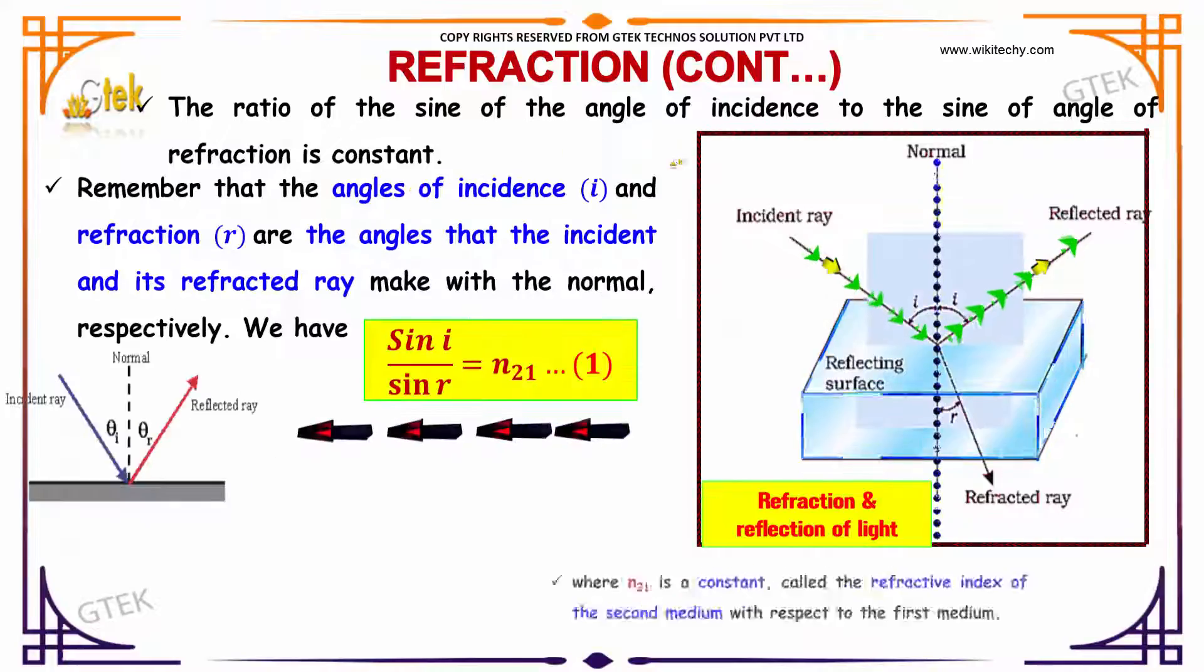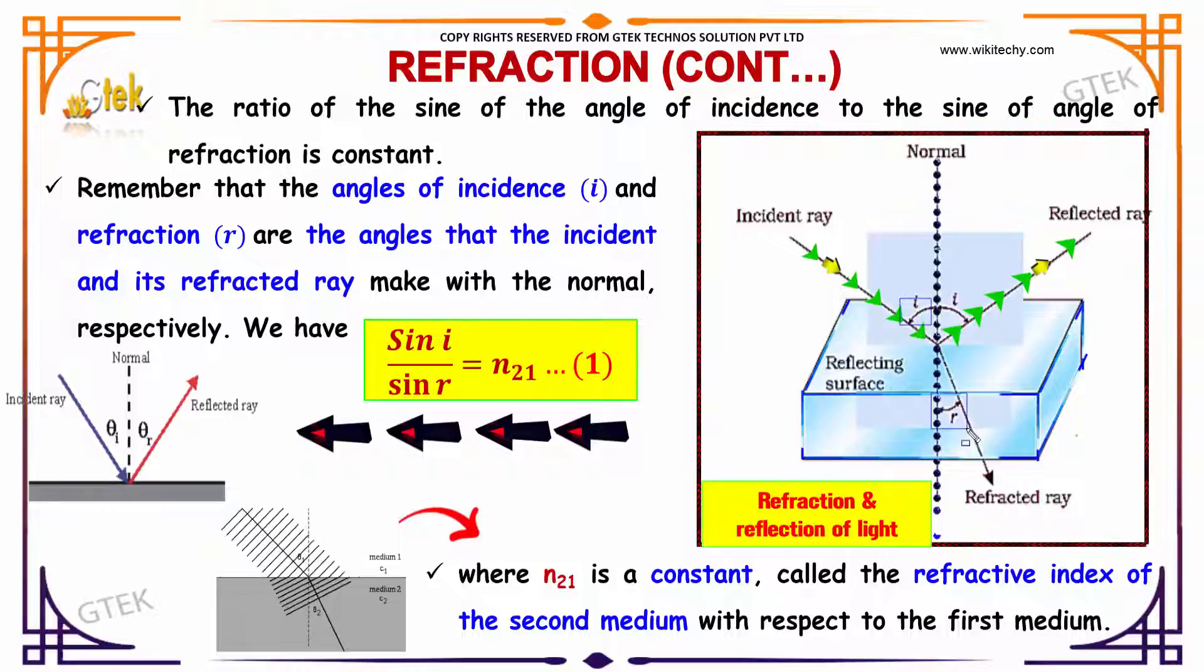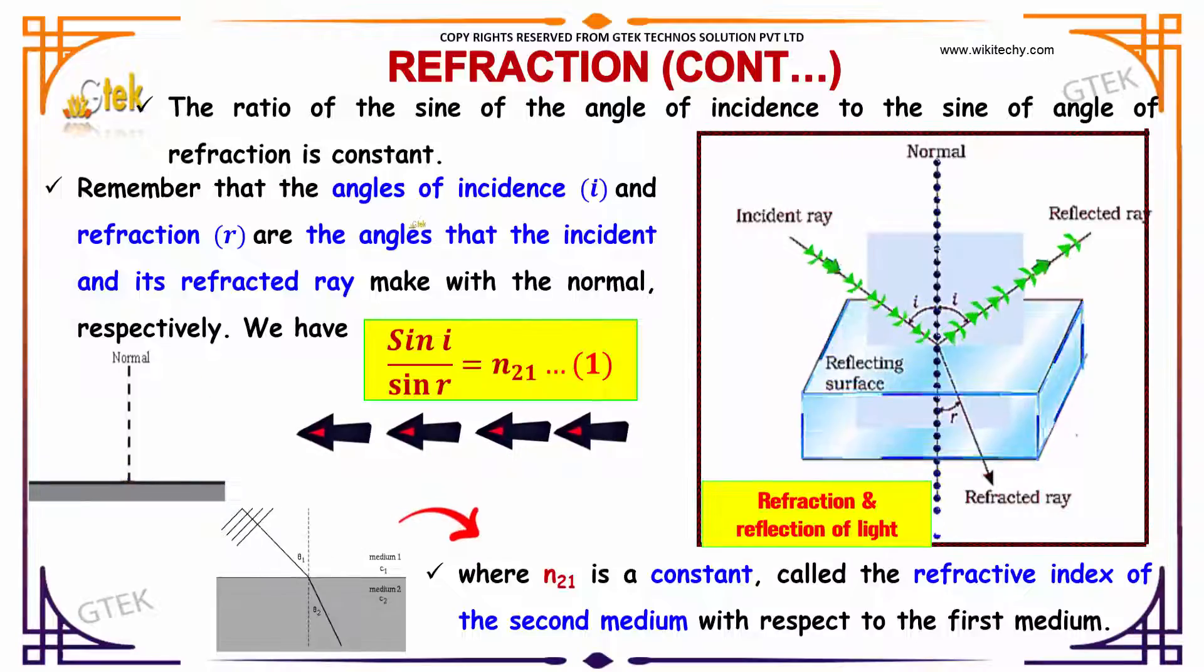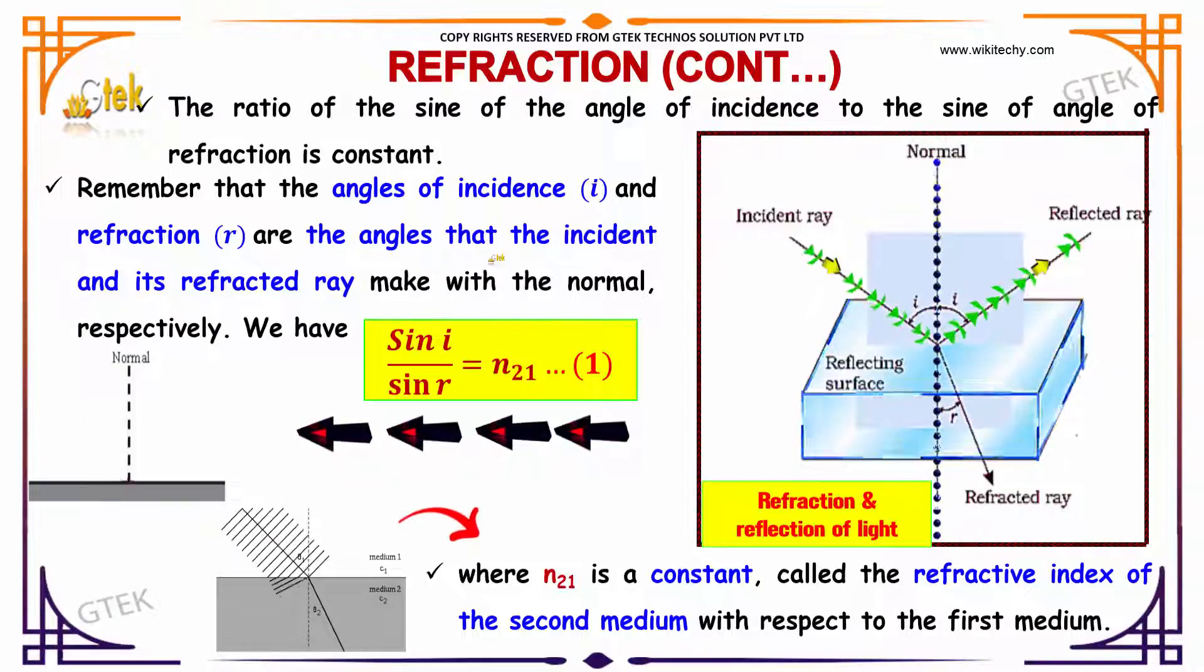The ratio of the sine of the angle of incidence to the sine of the angle of refraction is constant. This is incident and this is refraction. Remember that the angle of incidence i and refraction r are the angles that the incident and its refracted ray make with the normal.